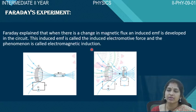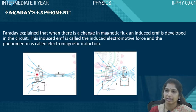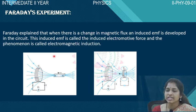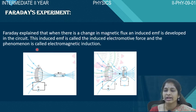Faraday's experiment is the converse of Oersted's experiment. In Oersted's experiment, we discussed that when current passes through a coil or conductor, it acts like a magnet — that means it produces a magnetic field. So according to Oersted's experiment, when there is a change in the current, magnetic field is produced. Faraday's experiment is the converse — the reverse — of that.